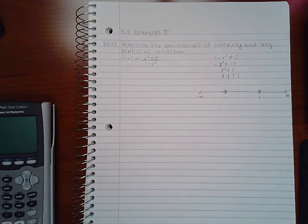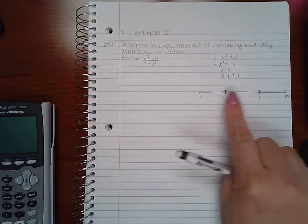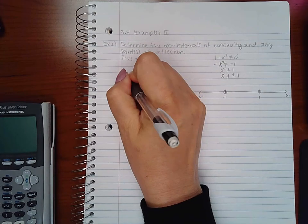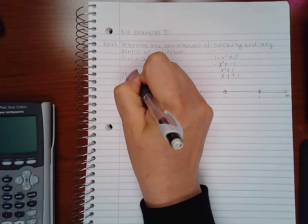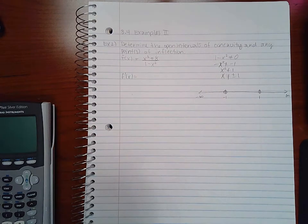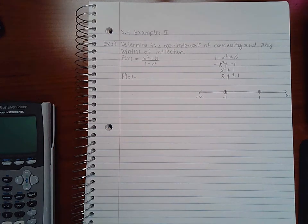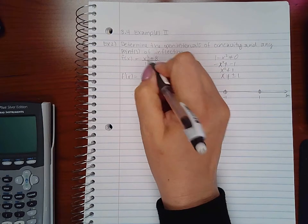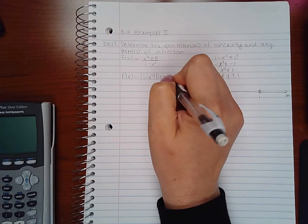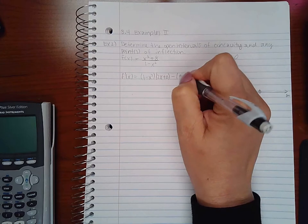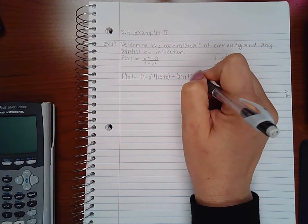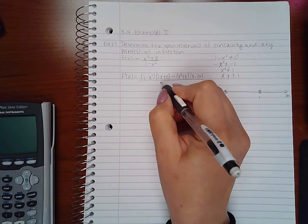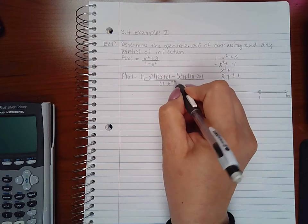Now I do still need to find my critical numbers to see if this number line is going to get broken up into any more intervals. So let's find the first derivative. Here, because I have two terms in the denominator, I will need to do the quotient rule: low d high minus high d low over low squared.